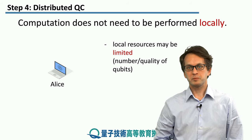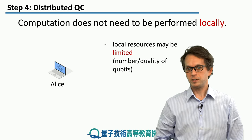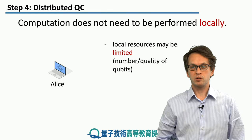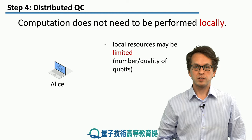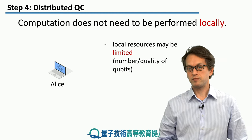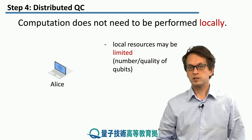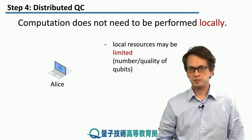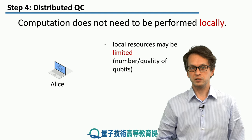Let's talk about distributed quantum computation first. There is no reason for Alice to perform all of her quantum computation locally. Let's say that her resources are limited — maybe she doesn't have a large number of qubits, or the qubits she has are not of sufficient quality. But that doesn't mean she cannot perform her quantum computation.